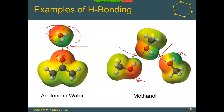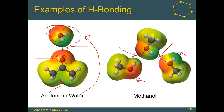Looking at these two images, acetone is the bottom molecule and water is above it. We can see that these two different molecules can still interact through hydrogen bonding, even though acetone on its own does not have hydrogen bonds to donate. Those familiar with nail polish remover should know acetone — one reason it works well is because it does not form hydrogen bonds on its own, but it can accept hydrogen bonds from other things. Within methanol, the hydrogens attached to oxygens interact with another nearby oxygen, forming hydrogen bonds.